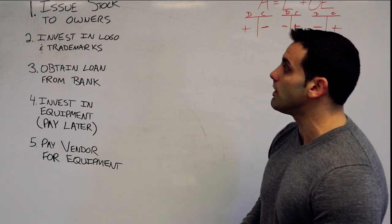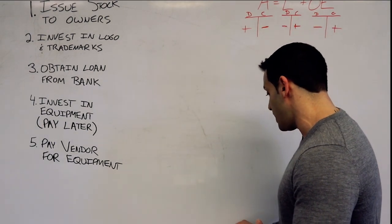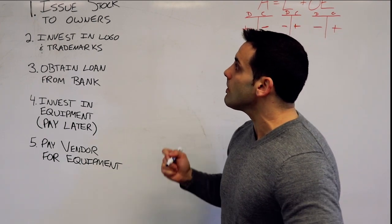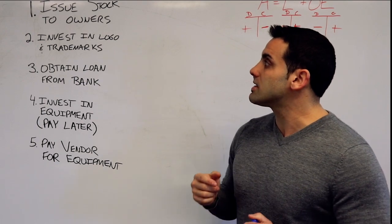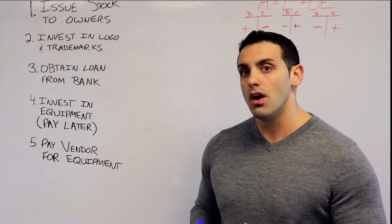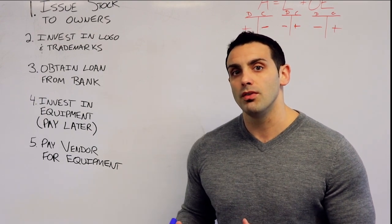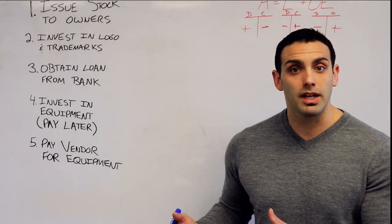So I have a handful of common transactions that we see when they relate to the balance sheet. The first one we see is issuing stock to owners. Now, in this case, what usually happens is owners contribute cash to the business in exchange for stock or equity.